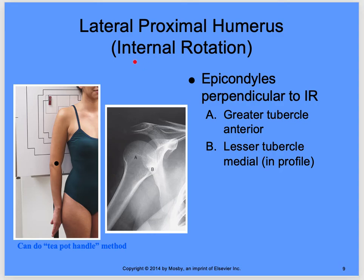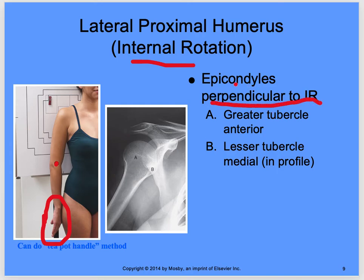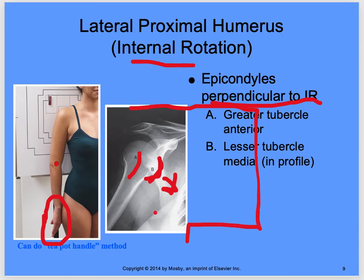For internal rotation, the back of the hand is placed on the hip. Your epicondyles are laid over top of one another — perpendicular to the IR. The greater tubercle moves anteriorly and the lesser tubercle is in profile next to the glenohumeral joint. Open your collimation to include the inferior angle of the scapula and the entire clavicle to the SC joint.